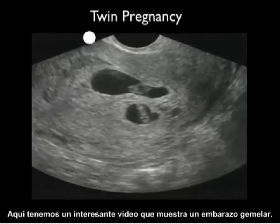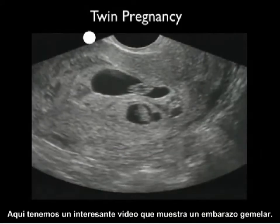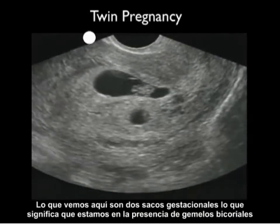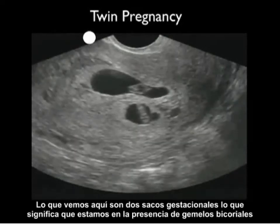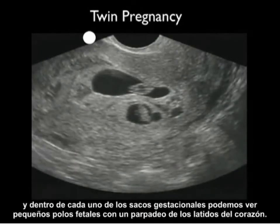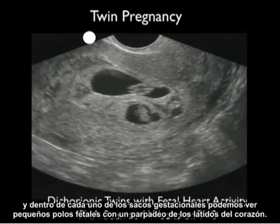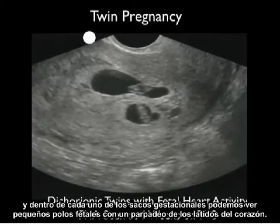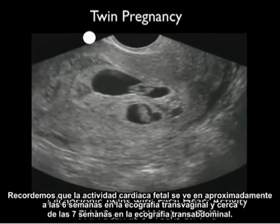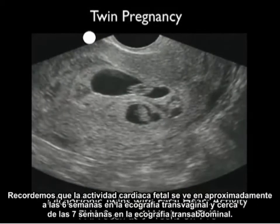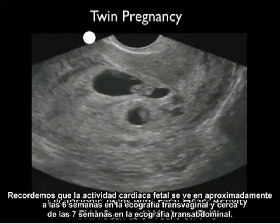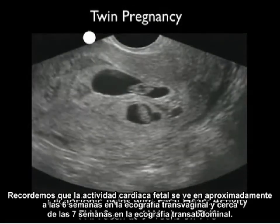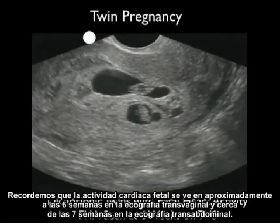Here's an interesting video clip showing a twin pregnancy. We see two gestational sacs signifying dichorionic twins, and within each gestational sac we can see little fetal poles with a flicker of heartbeats. Fetal heart activity is seen at about 6 weeks on transvaginal sonography and about 7 weeks on transabdominal sonography.